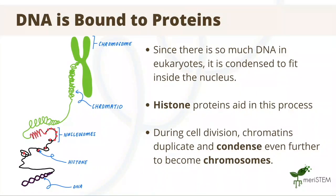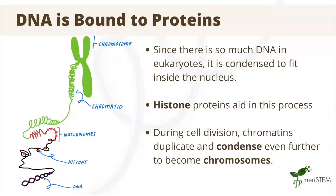Another point to cover is the fact that DNA is bound to proteins. These proteins are called histones, and they help in the process of condensing DNA so that it can fit inside the nucleus. Essentially, DNA is tightly coiled and wraps around histone proteins so that it can be nicely packaged as chromatin within the nucleus. During cell division, chromatins duplicate and condense even further to become chromosomes; otherwise they just exist as a chromatin network.